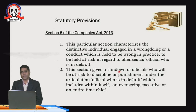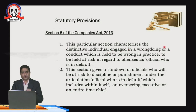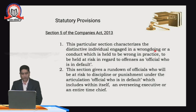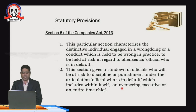Coming to statutory provisions — there are five or six under which a company can be held liable. Section 5 of the Companies Act 2013 addresses the officer in default who engages in wrongdoing. If a person is doing wrong from the start of the company and others have been informed, there should be a whistleblower policy. This section applies to the official who faces discipline or punishment, and the executive or manager would be held liable under Section 5.